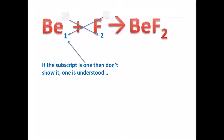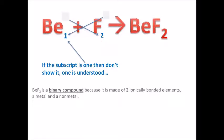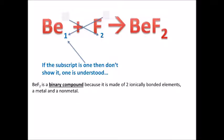Remember, if the subscript is one, you don't have to show it — that one is understood. So instead of writing Be₁F₂, I just write BeF₂. Also important to note: BeF₂ is referred to as a binary compound. That prefix 'bi' means two — it's a binary compound because it's made of two ionically bonded elements, a metal and a non-metal.